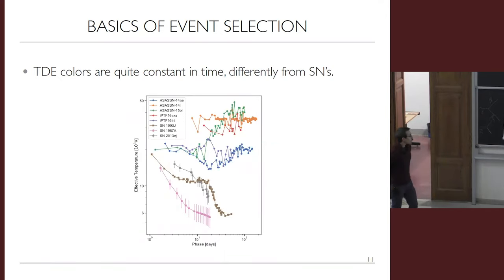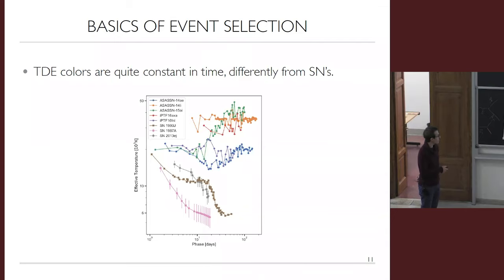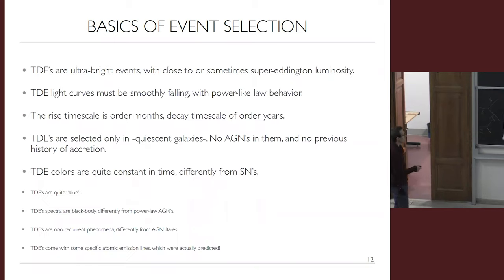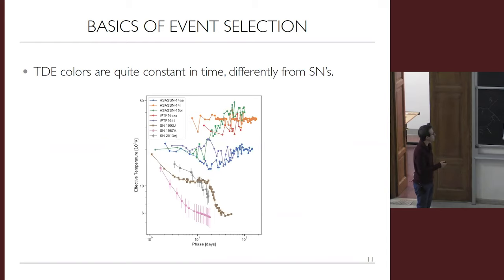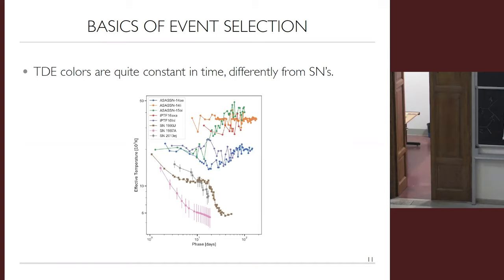To distinguish TDEs from supernovae, one important handle is the behavior of color as a function of time. Supernovae have very variable colors that get colder over time, while TDE color evolution is very flat. These are just some of the many handles used to distinguish TDEs from AGNs or supernovae. Some events are controversial — sharing similarities with supernovae — but if a set of trusted handles is applied, the counts can be cross-checked for consistency.